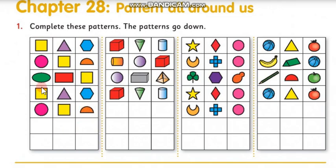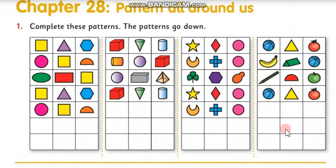So our next row to fill in will be a green oval, a red rectangle, and a yellow square. Then the pattern continues for another row. For each of these patterns, go down through each row, identify what the pattern is, see where it begins to repeat, and then fill in the next line. Here you have three rows to fill in, here you have two, and here you have three.